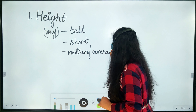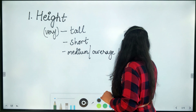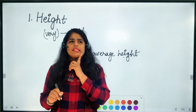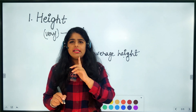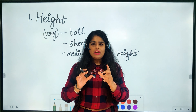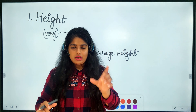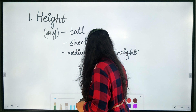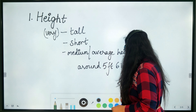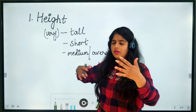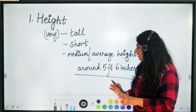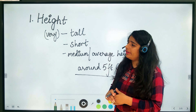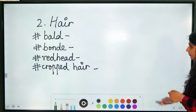If you want to be more precise and give specific information about height, you can say something like 'I think he is around five foot six inches' — using 'around' to show you're not giving exact information. So you can say: tall, short, medium height, average height, or around five foot six inches.